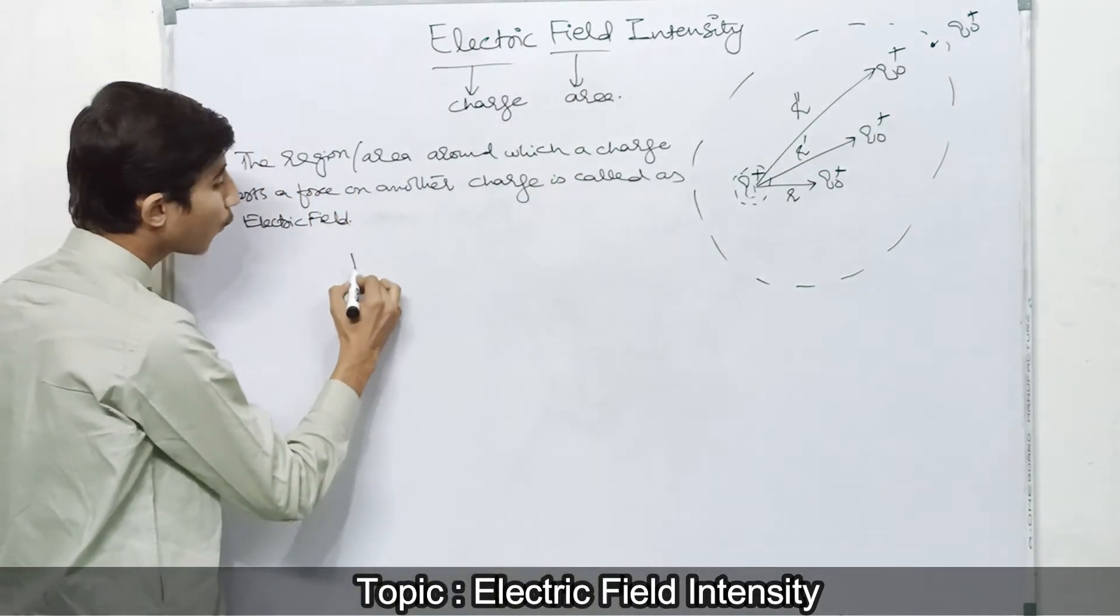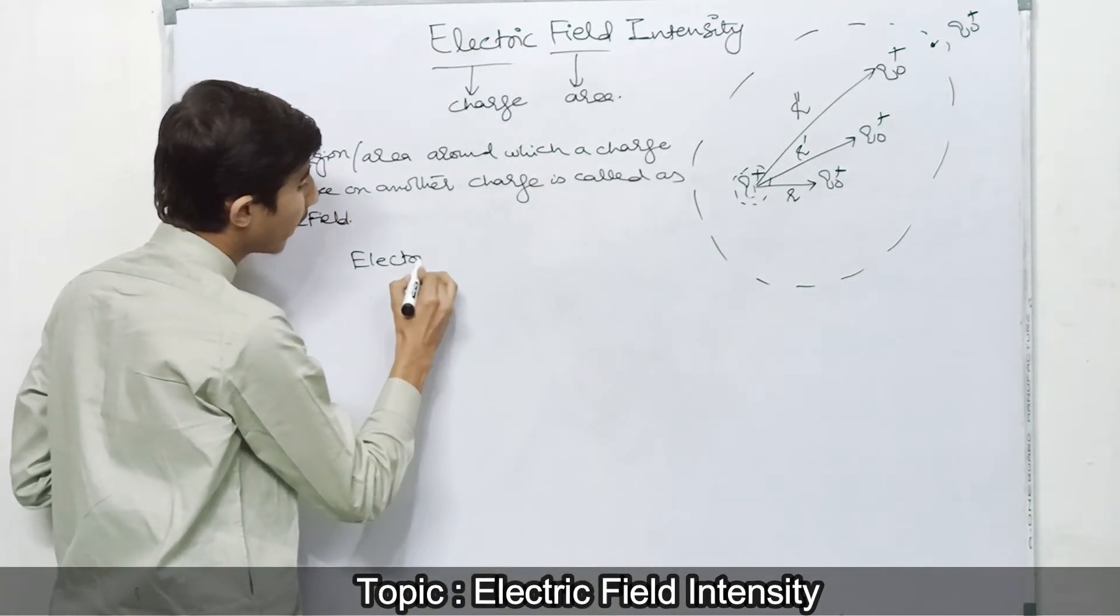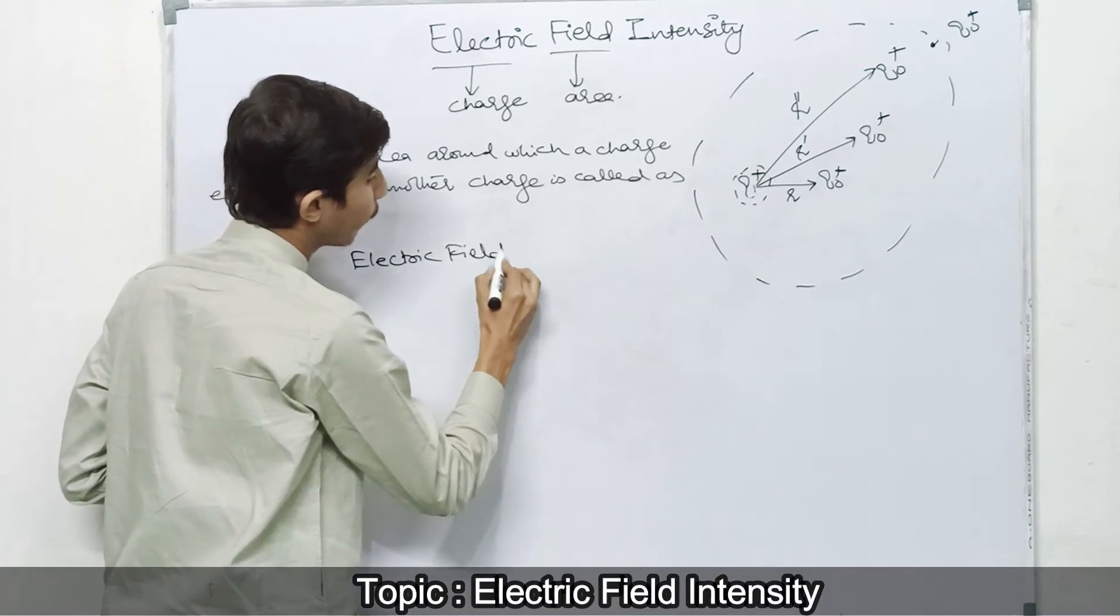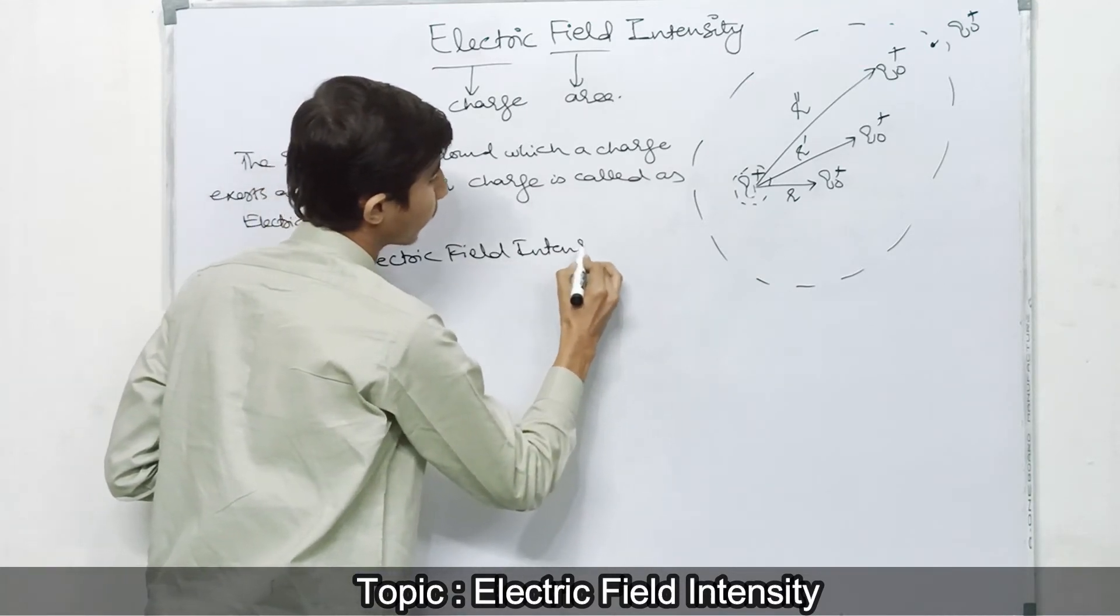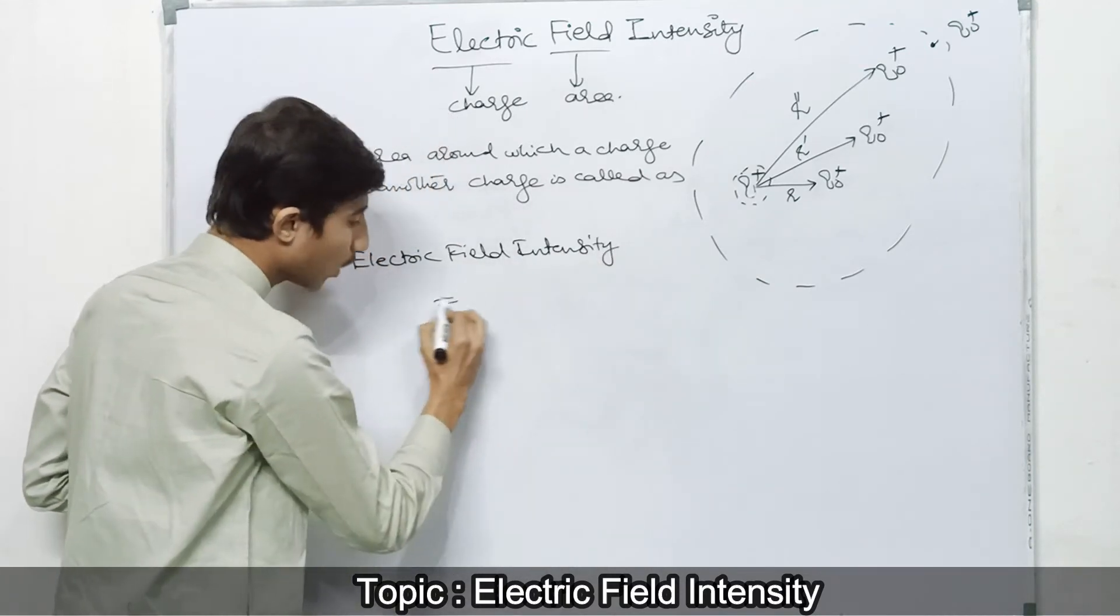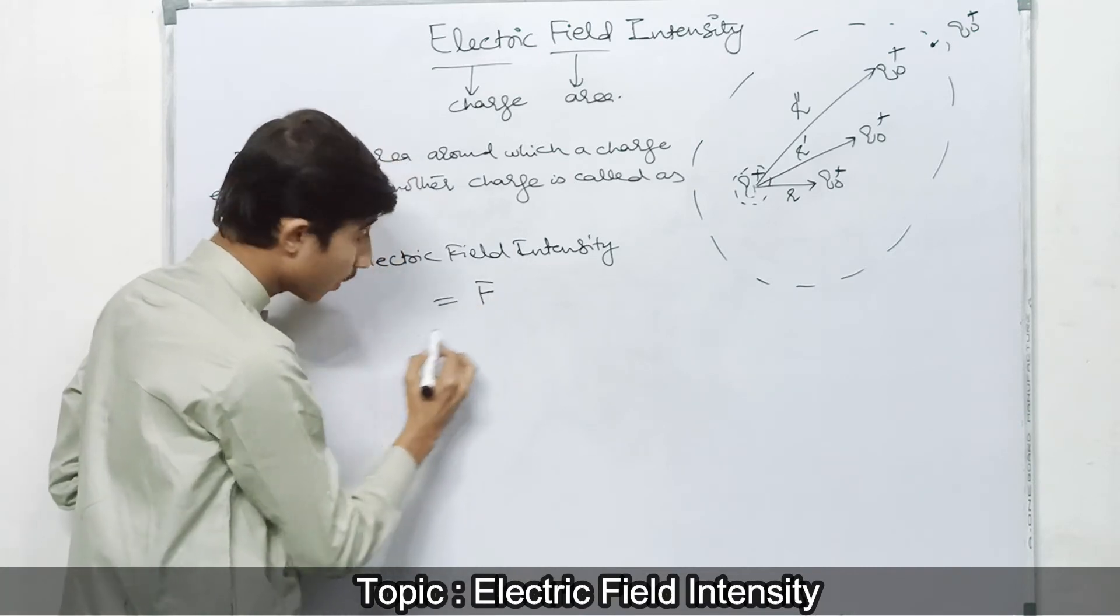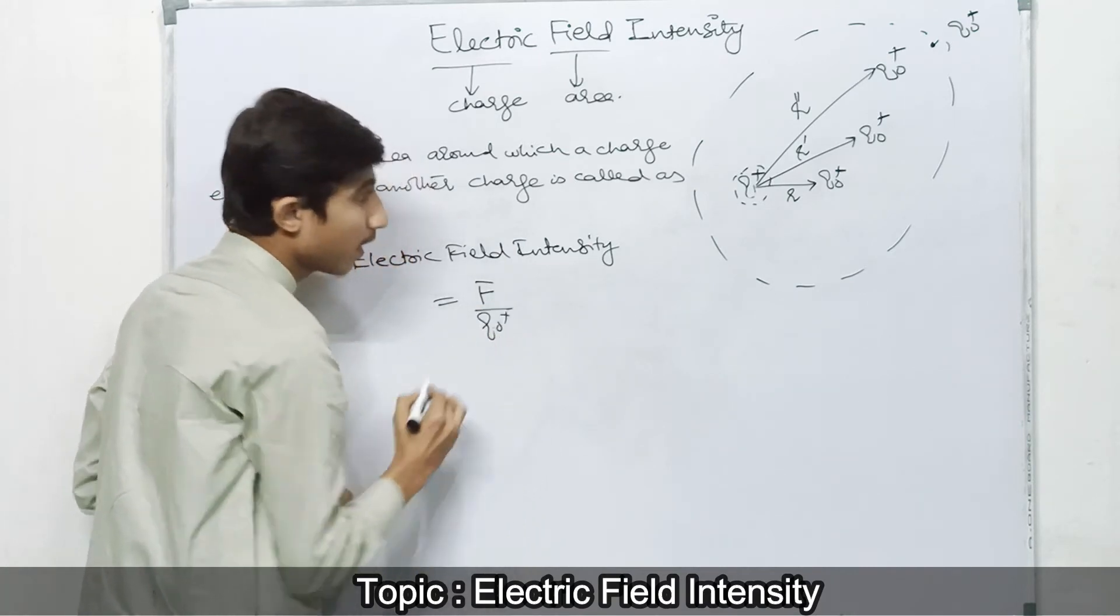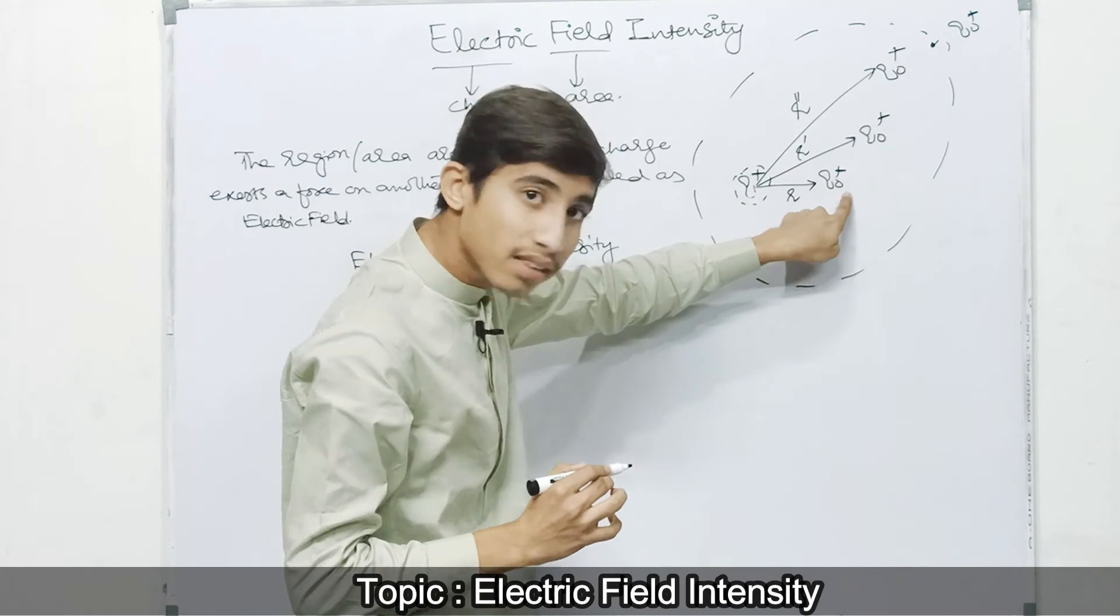So we define electric field intensity as equal to force per unit positive charge. The charge experiences force, which is multiplied for unit positive charge.